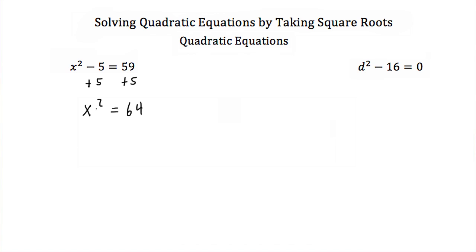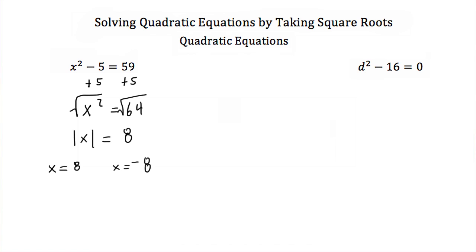Now to solve for x, I take the square root of both sides and end up with the absolute value of x is equal to 8. Dropping the absolute value gives x is equal to 8 and x is equal to negative 8, or x is equal to plus or minus 8.